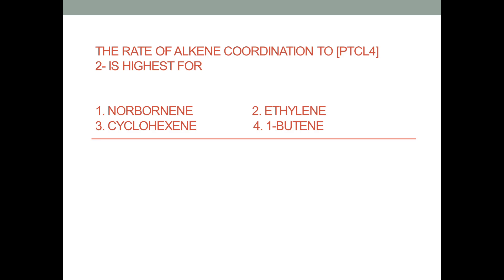This is a very tricky question that came in the December 2016 paper. The question asks: the rate of alkene coordination to PtCl₄²⁻ is highest for which compound? So which alkene will coordinate with PtCl₄²⁻ the fastest? This is quite a tricky question, and I'll explain the reason.